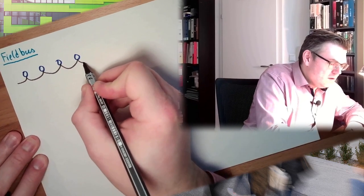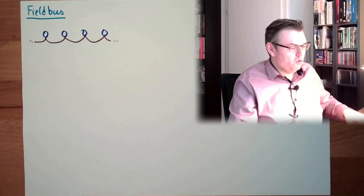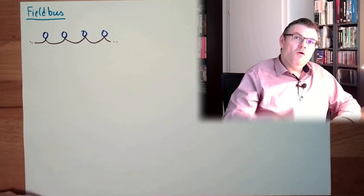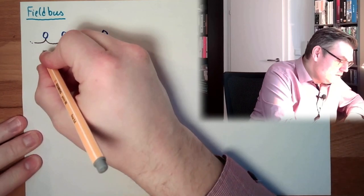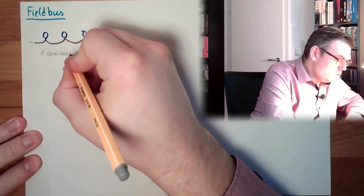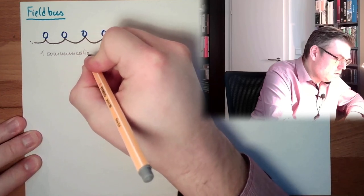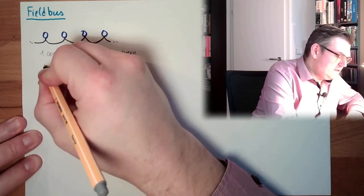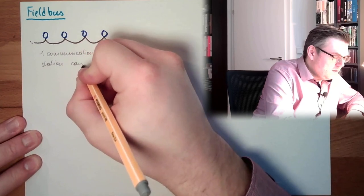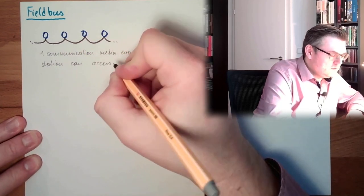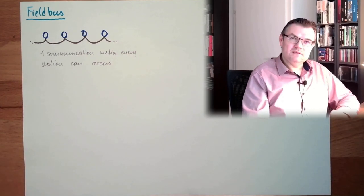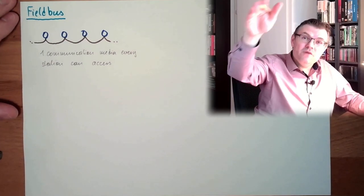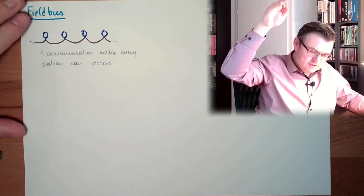How this looks like, we will discuss in a separate video about topology. But this is typical for a bus system - we have one communication media. Every station can access. This is a bus, and field buses - this bus has to go somewhere, to the field, to the field of application.